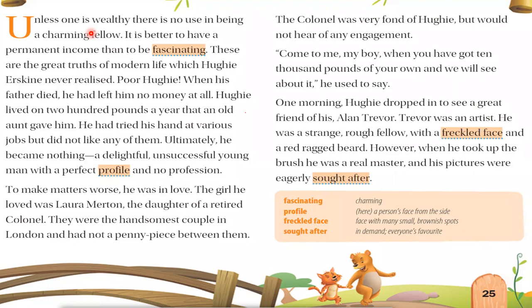'It is better to have a permanent income than to be fascinating.' Fascinating means attractive or charming. So it is better to have a permanent income — to be earning something — than to be charming. These are called the great truths of modern life, which Hughie Erskine never realized.